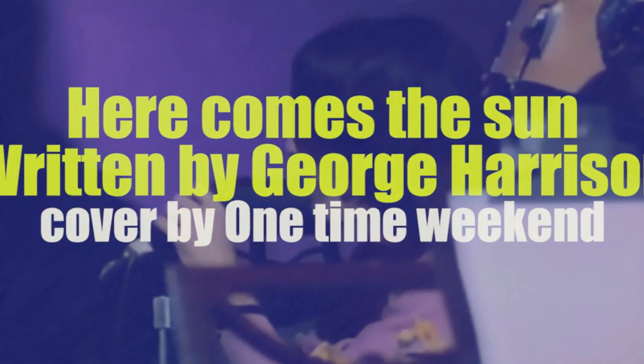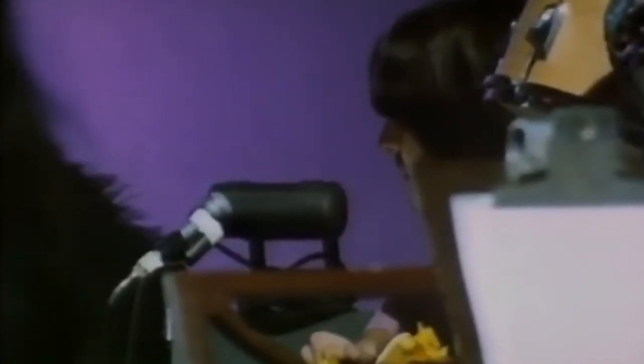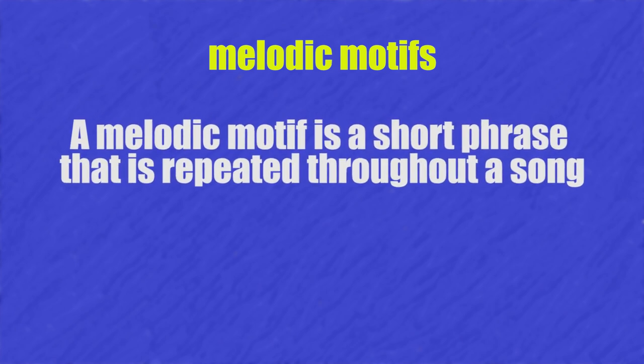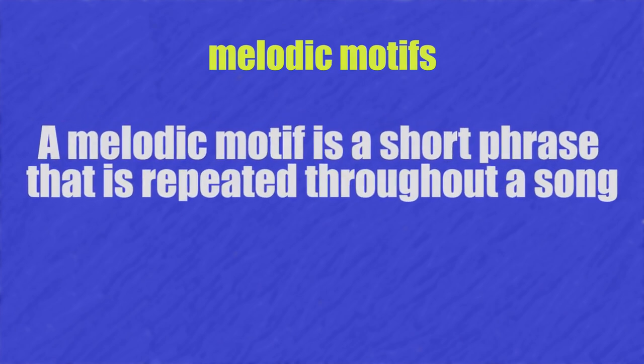Melodic motifs. Let's look at Here Comes the Sun. If we look closely we can see three melodic motifs that are repeated throughout the whole song. A melodic motif is a short phrase that is repeated throughout a song.